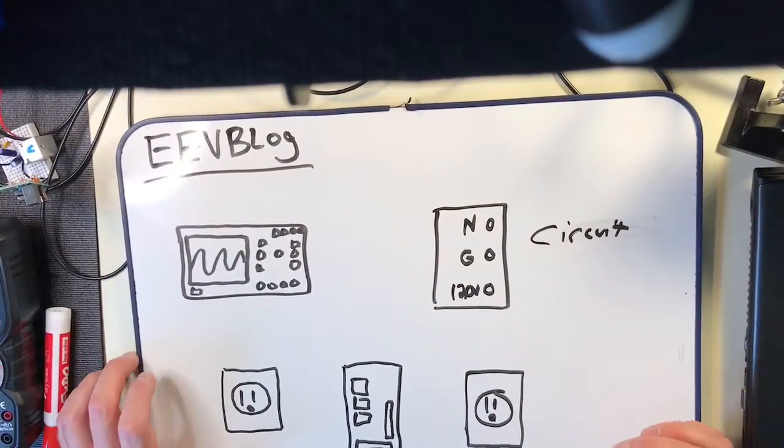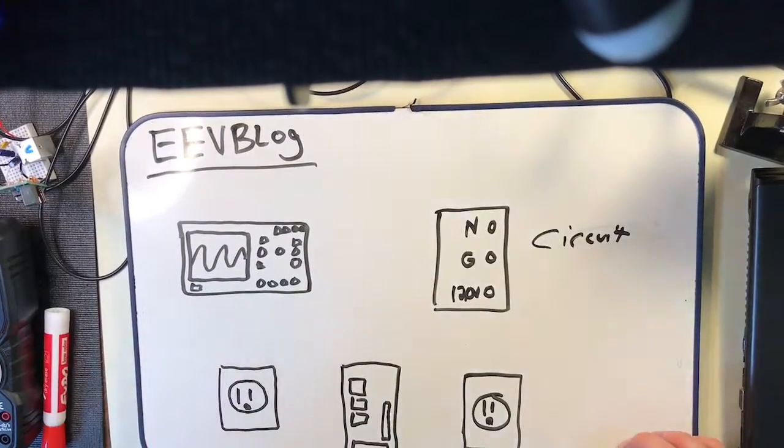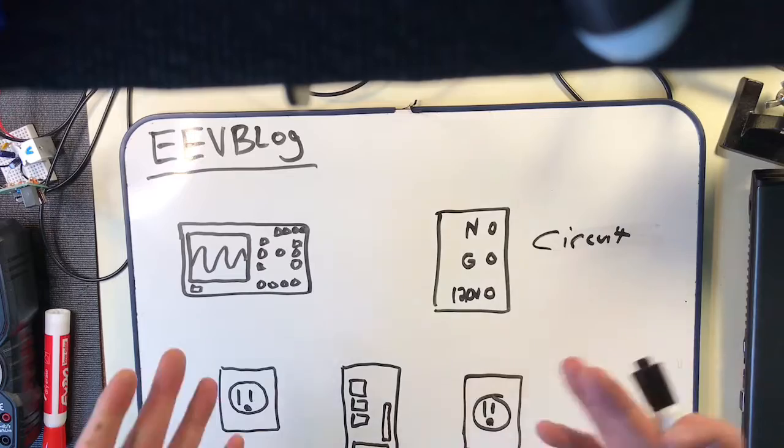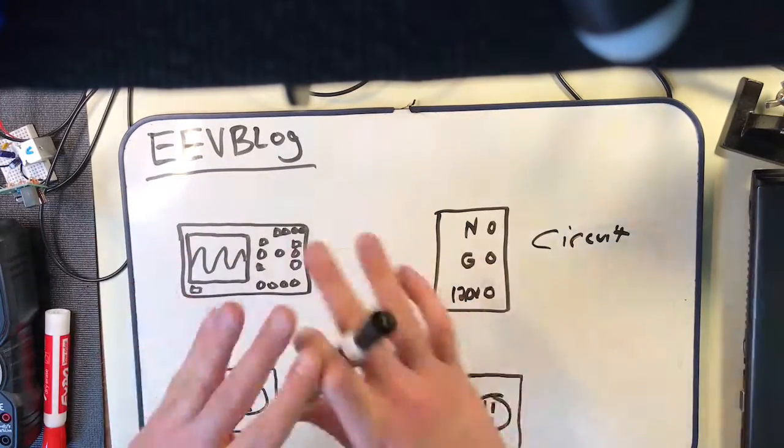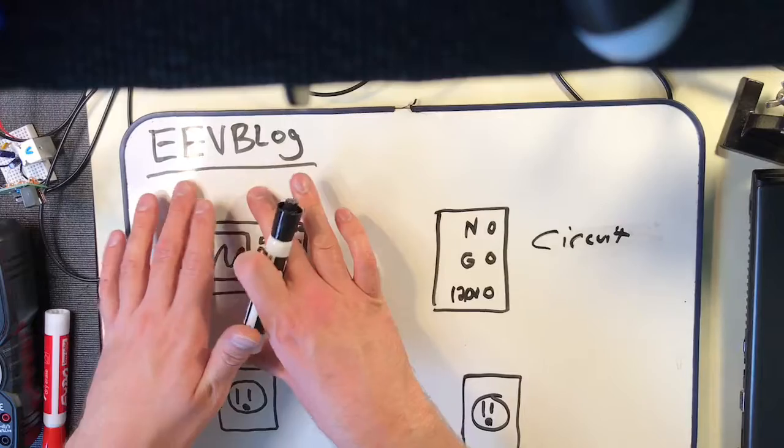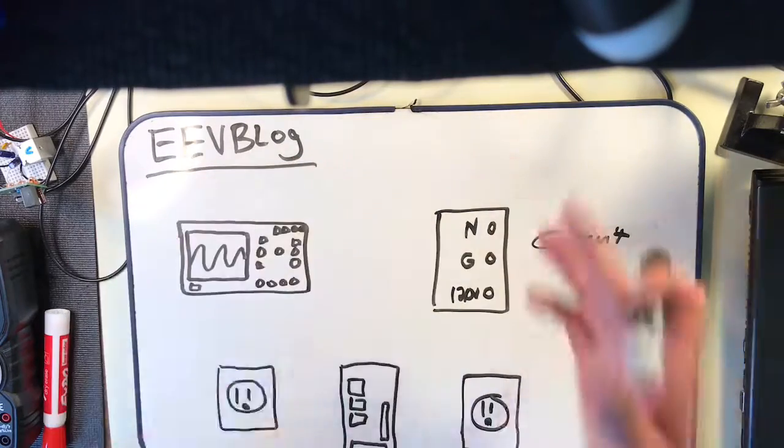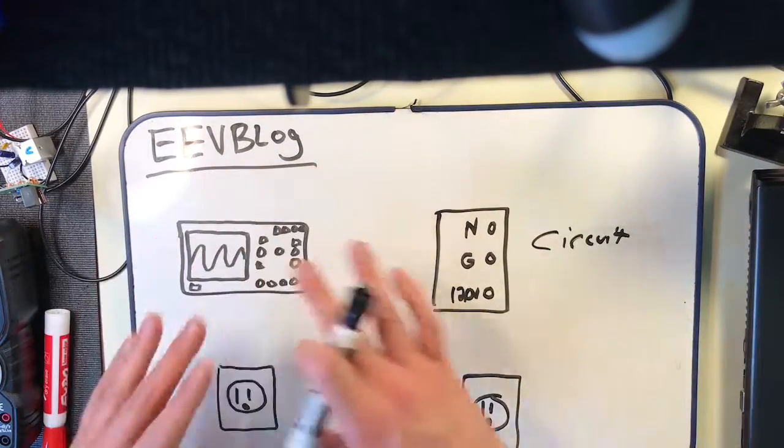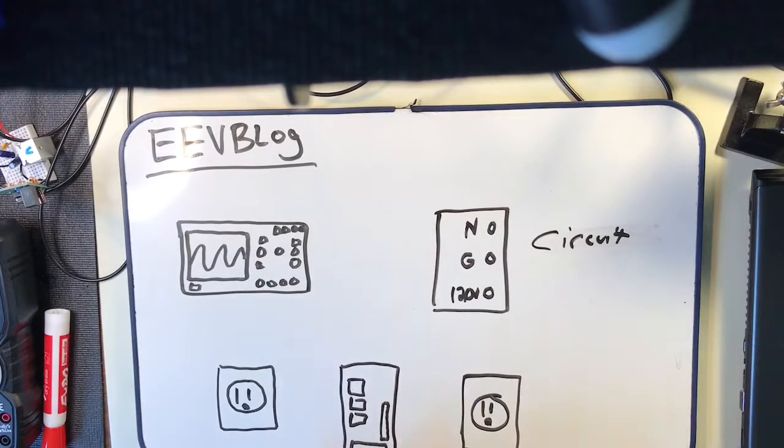So let's look at an example where this can be a problem. This is a really condensed version of what Dave did over at EEVblog. So if you want to see the full explanation for this, head over there and look for his video on how not to blow up your oscilloscope. And this is sort of a very condensed version of that.